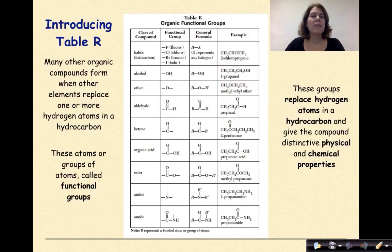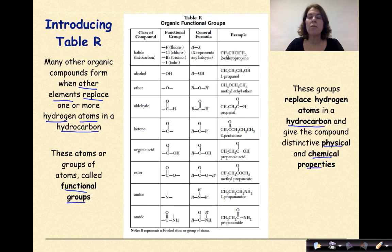So let's start off by talking about table R. Many other organic compounds form when other elements replace one or more hydrogen atoms in a hydrocarbon. These atoms, or groups of atoms, are called functional groups. So right now you should have table R open in front of you if you are taking regents chemistry, or you can look at the one on the screen. These groups replace hydrogen atoms in a hydrocarbon and give the compound very distinctive physical and chemical properties. So over the next couple of videos we're going to be talking about all these different classes of compounds. Today though we're going to just focus on the halides.